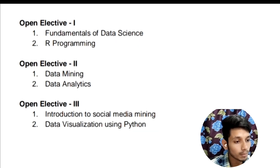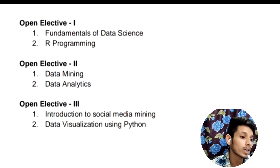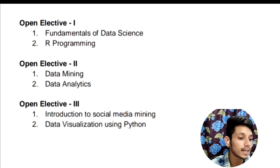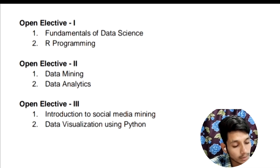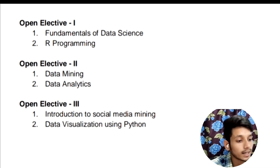Along with that, you will be having 3 Open Electives. In Open Elective 1, there will be two subjects: Fundamentals of Data Science and R Programming. In Open Elective 2, the subjects will be Data Mining and Data Analytics. In Open Elective 3, the subjects will be Introduction to Social Media Mining and Data Visualization using Python.